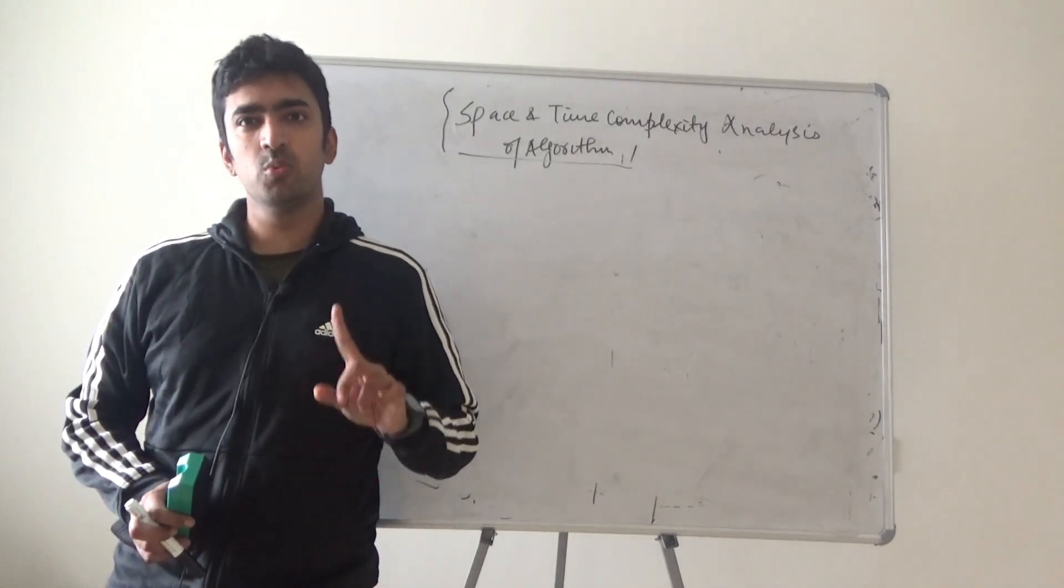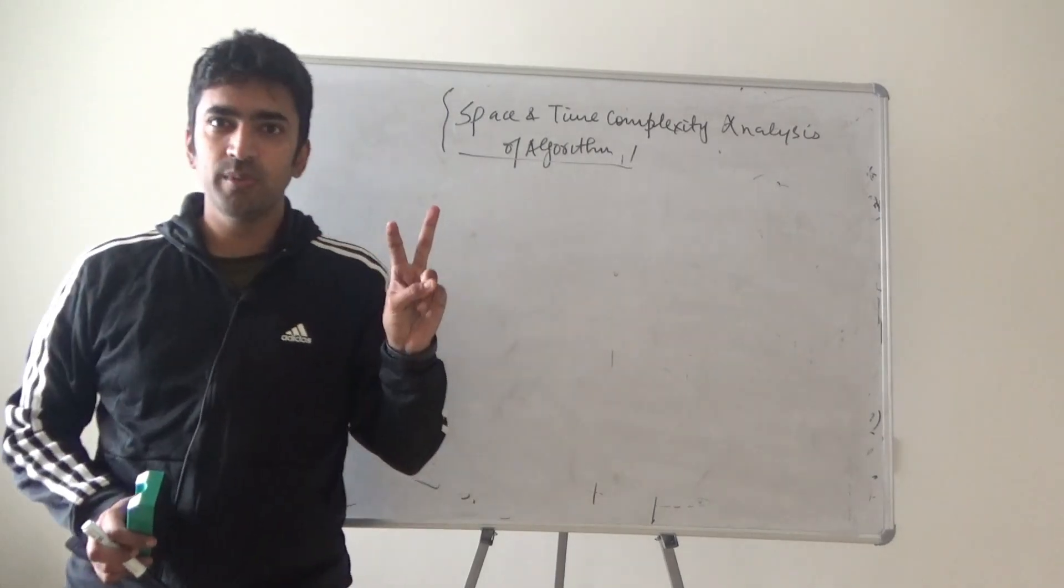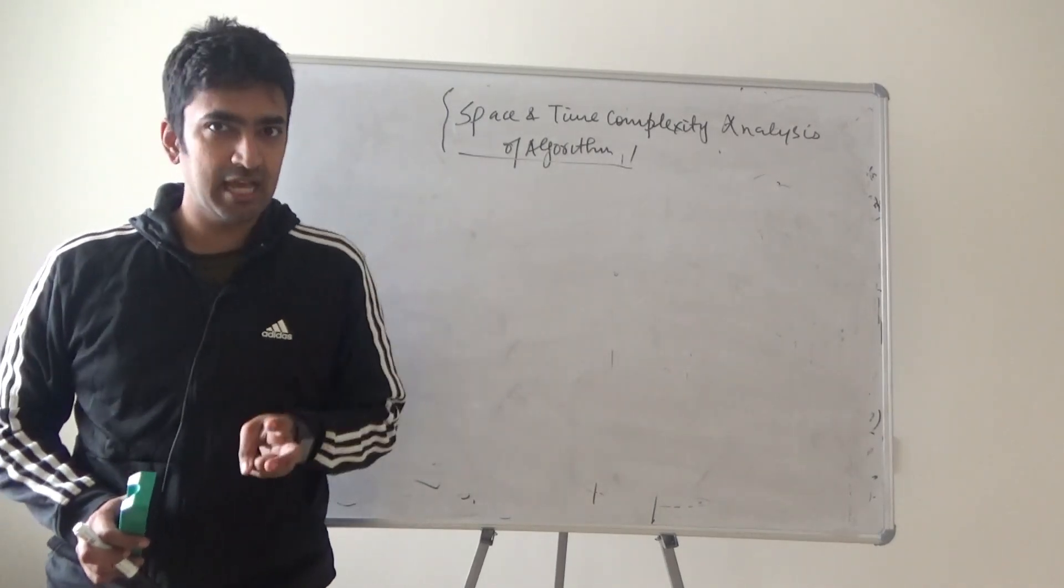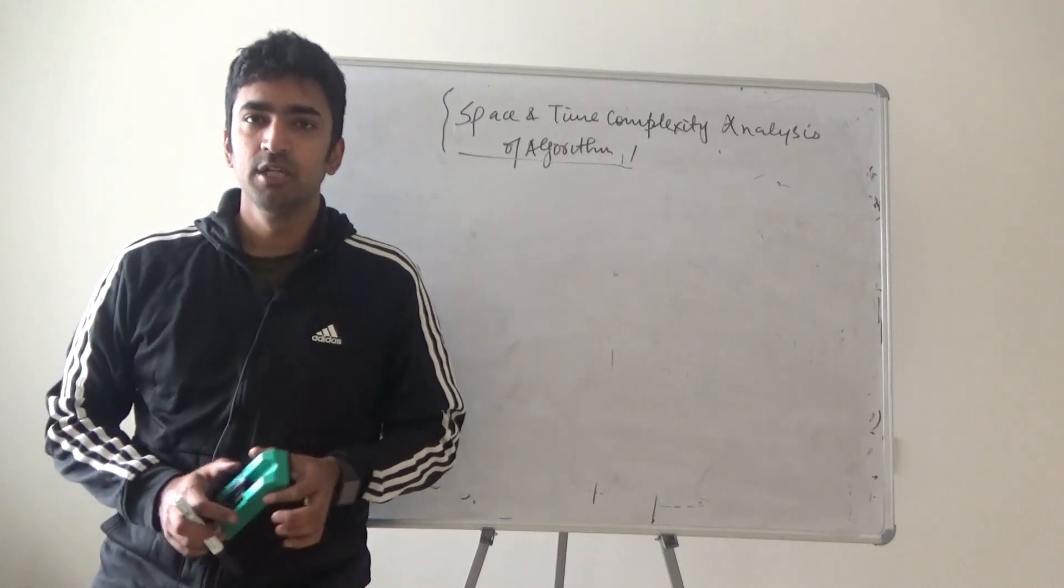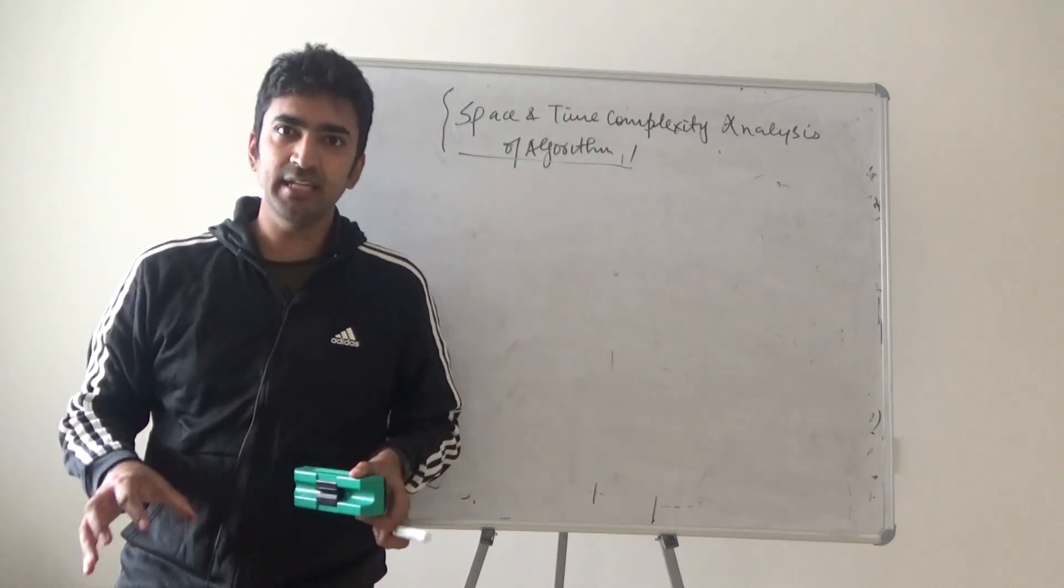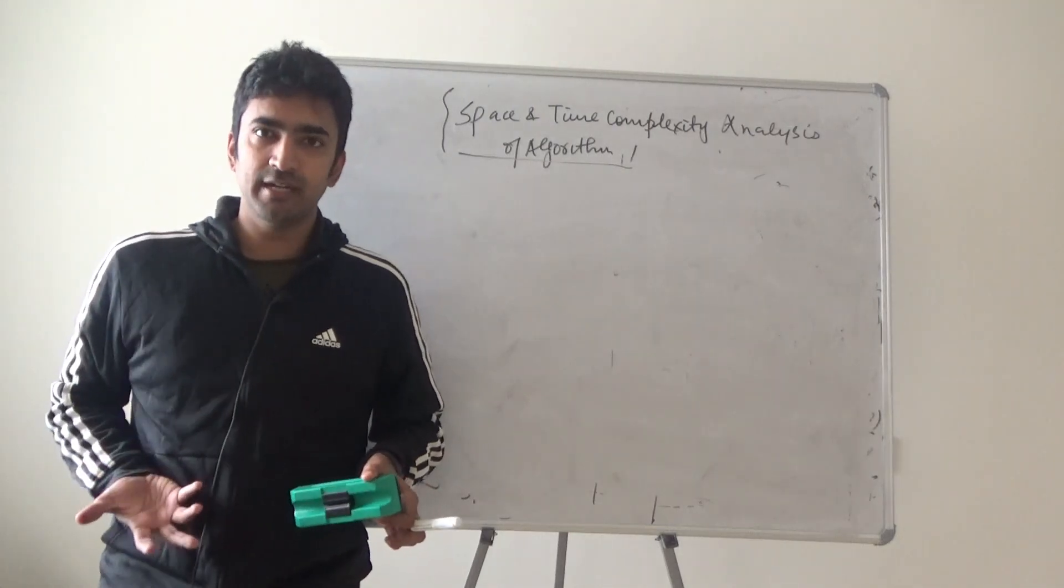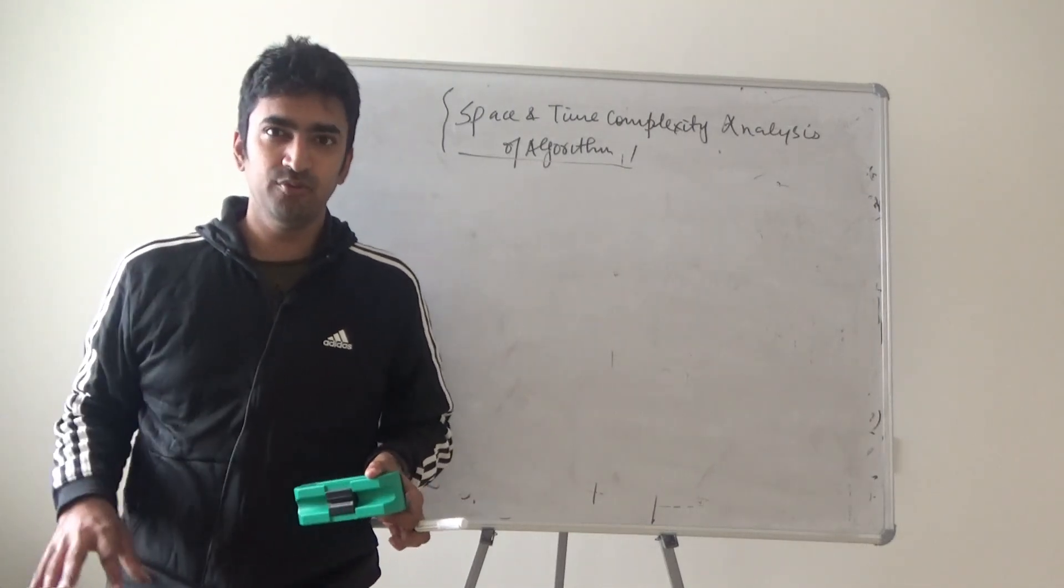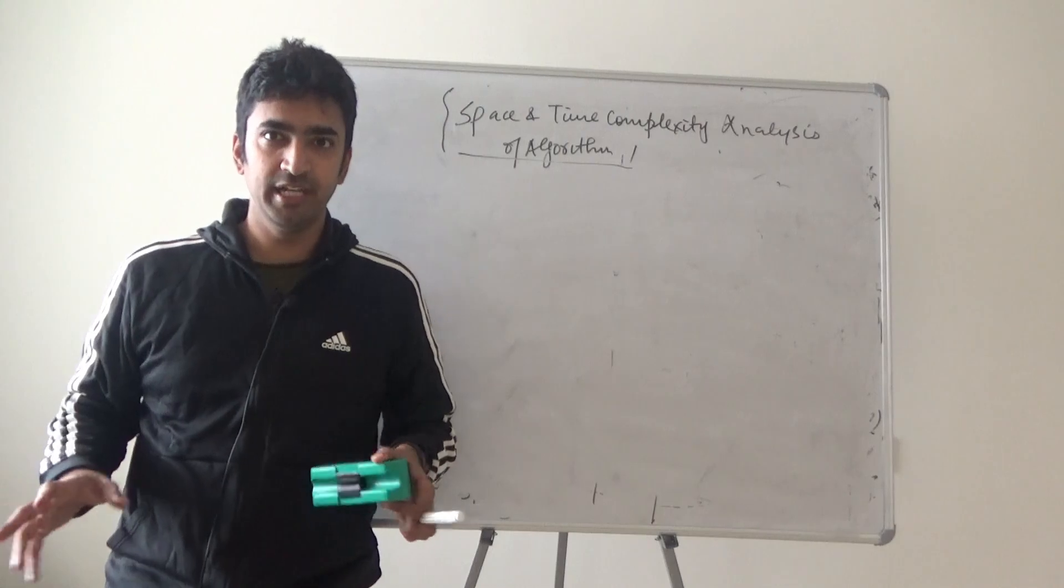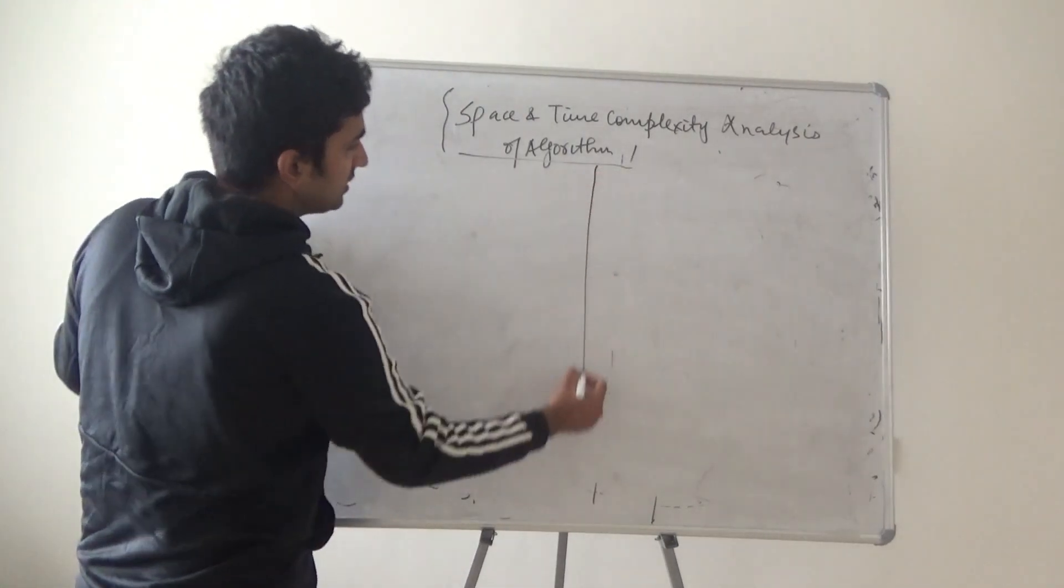We are taking one simple example which can be solved in two ways and that algorithm is swapping of two numbers. So I'm basically writing the function definition of that particular algorithm and then I will let you know which should be preferred accordingly.